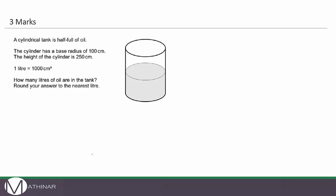In this question we're looking at a cylindrical tank which is half full of oil. The cylinder has a base radius of 100 centimeters and a height of 250 centimeters. The volume of a cylinder is π r² h. One liter is equal to 1000 centimeters cubed. We need to work out the volume of the oil, which is currently in the shape of a cylinder. So we calculate π × 100² × h.